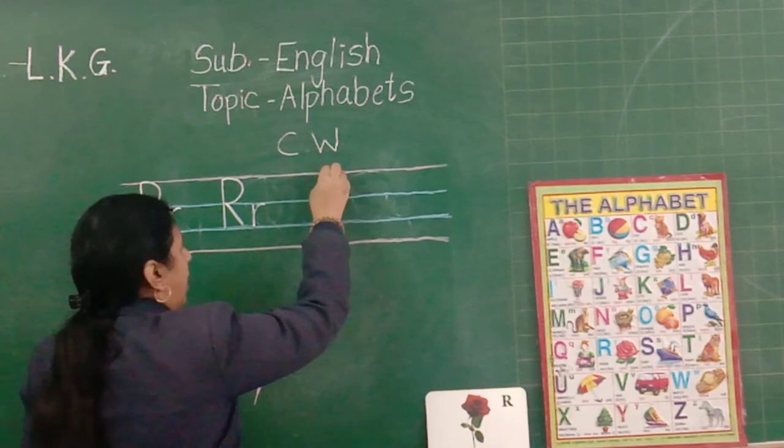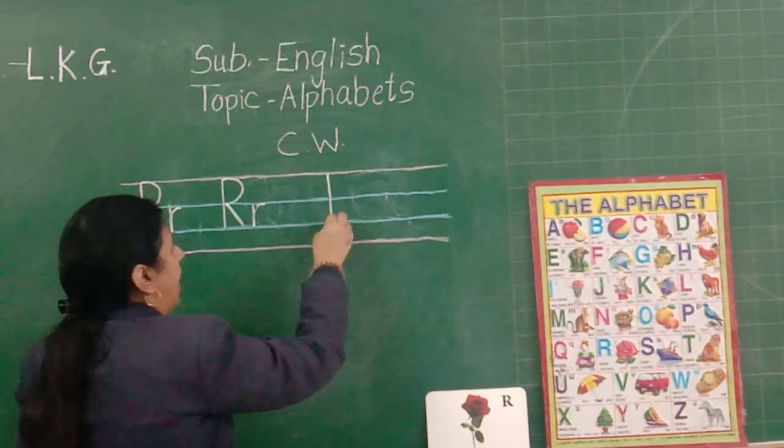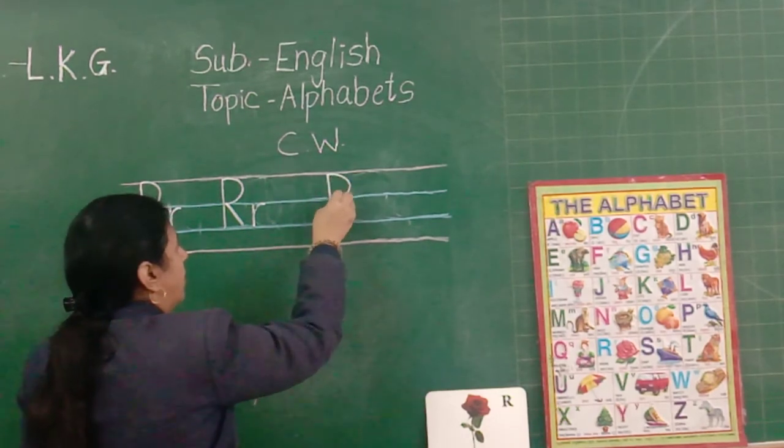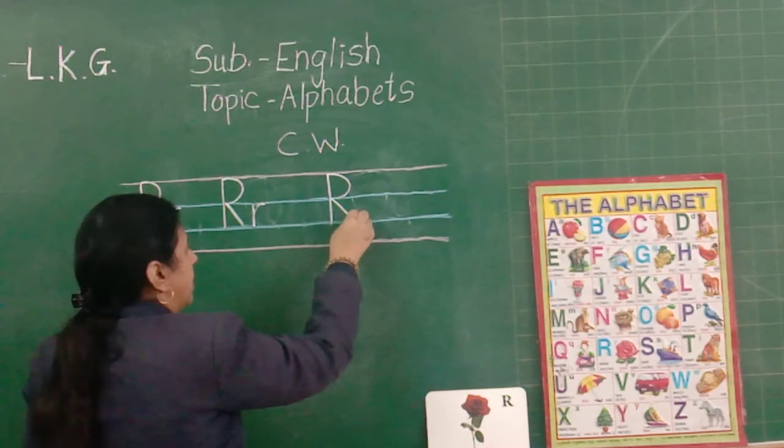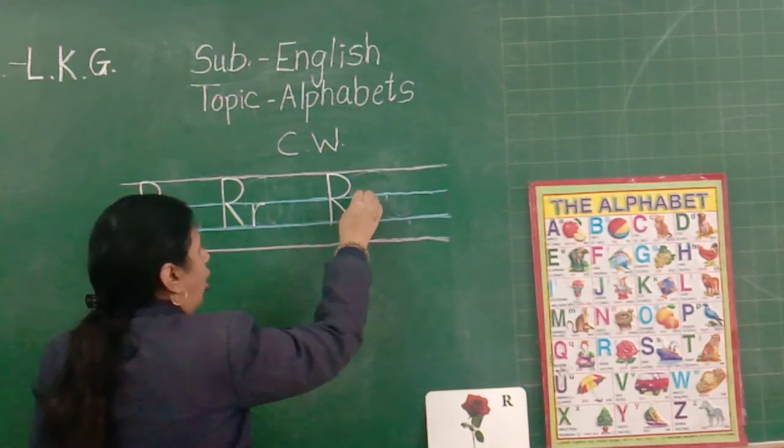On the second blue line here. Capital R and small r.